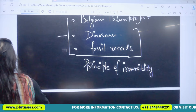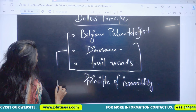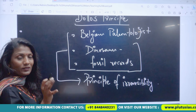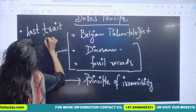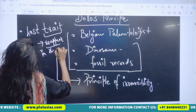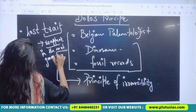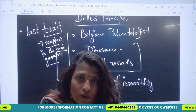What is this Principle of Irreversibility? Louis Dollo proposed that once a trait is lost, it cannot reappear in the next generation. This is the main argument.